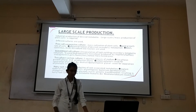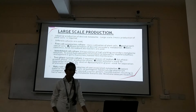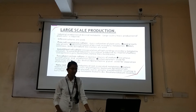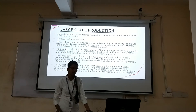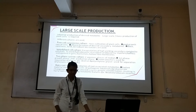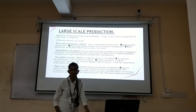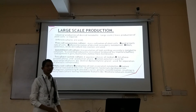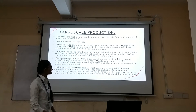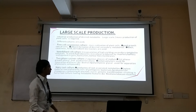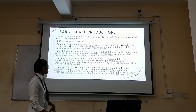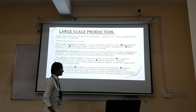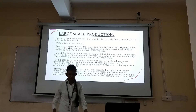Hairy root culture is used for production of root-associated metabolites. Plant material is inoculated with cells of the pathogenic bacterium Agrobacterium rhizogenes, containing the Ri (root-inducing) plasmid, which causes genetic transformation resulting in hairy root culture having metabolite features. For example, Nicotiana tabacum produces nicotine.